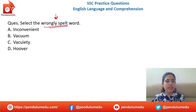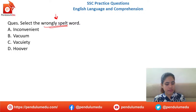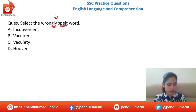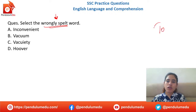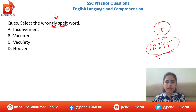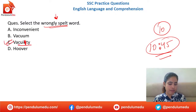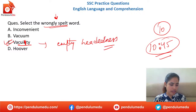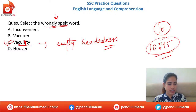One more incorrectly spelled word: inconvenient, vacuum, vacuity, huwa. Option C — 'vacuity' — is incorrect as spelled. The word does not need an extra 'e.' 'Vacuity' means empty-headedness. Option C is the incorrectly spelled word. Everyone got it right.